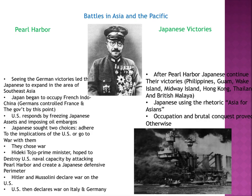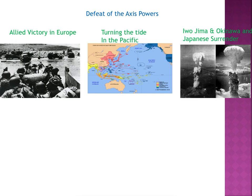After Pearl Harbor, the Japanese were successful in their agenda for a time, continuing their victories. They took the Philippines, Guam, Wake Island, Midway Island, Hong Kong, Thailand, and British Malaya. The Japanese used the rhetoric 'Asia for Asians' — when they went into these lands they claimed to be doing it for all of Asia. But the reality was that the people saw how they were being treated by the Japanese and said, this is not Asia for Asians, this is Asia for Japan. The occupation was often brutal conquest.